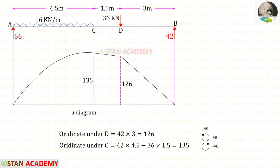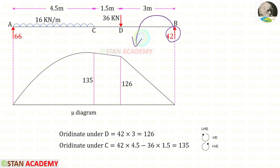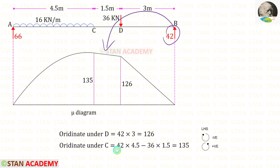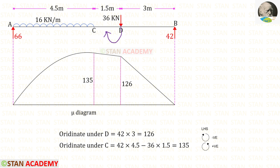Now we draw the bending moment diagram for the simply supported beam. From point B we find the ordinates under point D and under point C using the left-hand side rule: clockwise is negative and anticlockwise is positive. RB acts anticlockwise at distance 3, giving 42 × 3 = 126. For the ordinate under point C, RB acts anticlockwise at distance 1.5, and we get 135. Using these two ordinates we can draw the bending moment diagram.